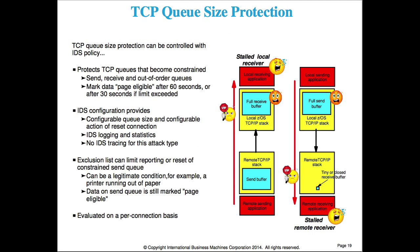TCP queue size protection looks at send queues, receive queues, and out-of-order queues, looking for them to become constrained. Regardless of IDS, after a certain number of seconds data is marked page-eligible. With IDS, you can get notification and potentially reset a constrained connection. This is focused on individual TCP connections, not across the whole system.